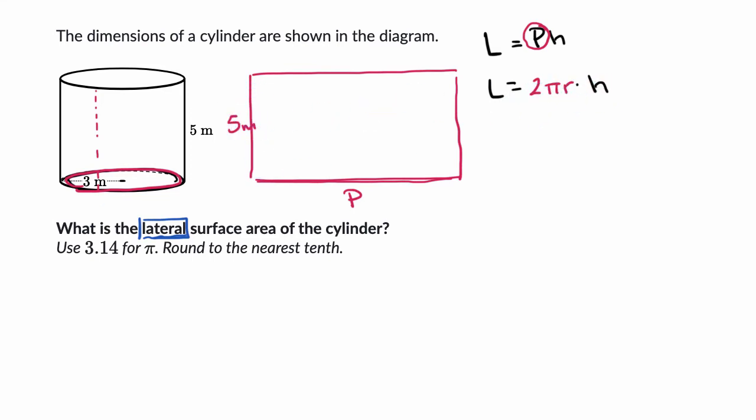So let's just do that right over here. So the perimeter of the base is going to be two pi, what's our radius, it is three times three, and then what is our height? We've already talked about that. It is five meters, so times five. So this is going to be equal to two times three times five times pi, so that's six times five, so that's 30 pi,